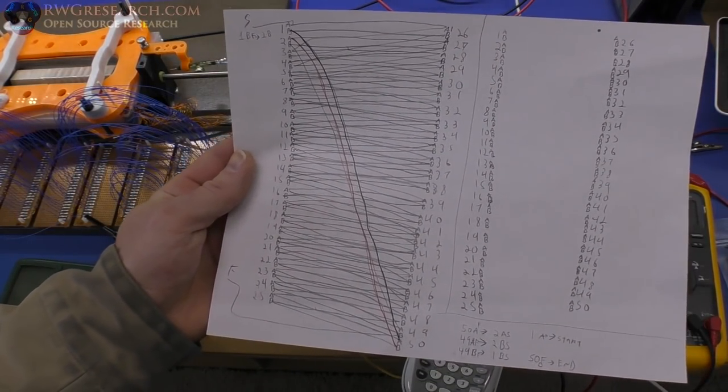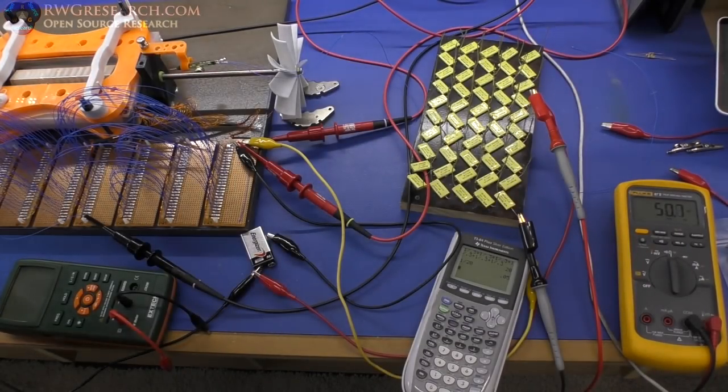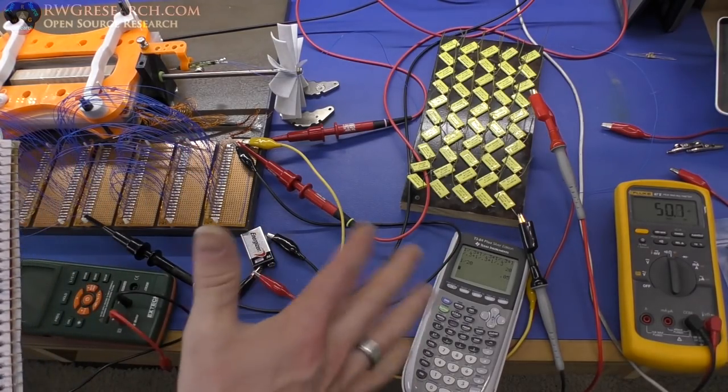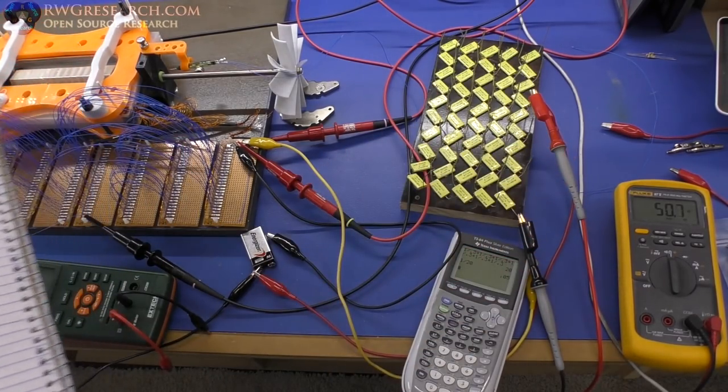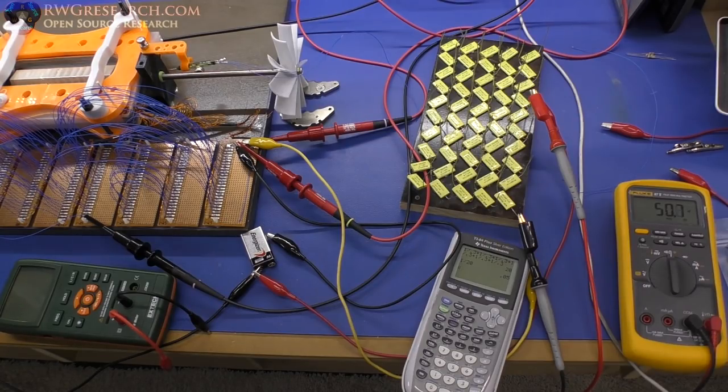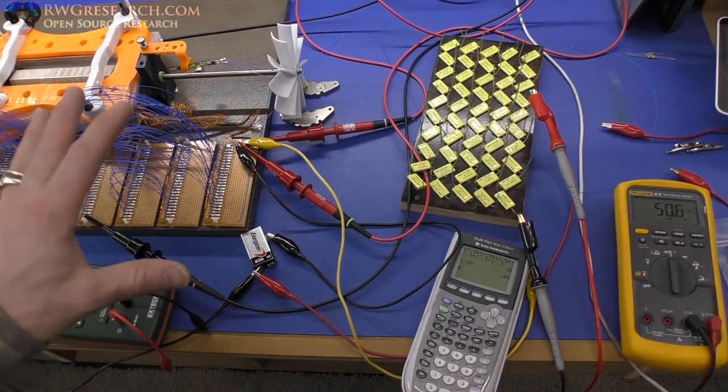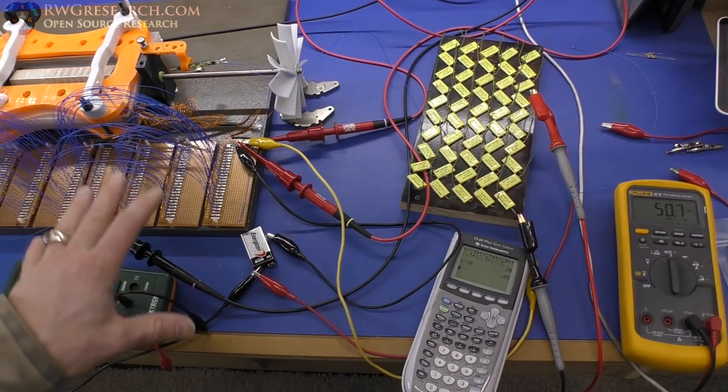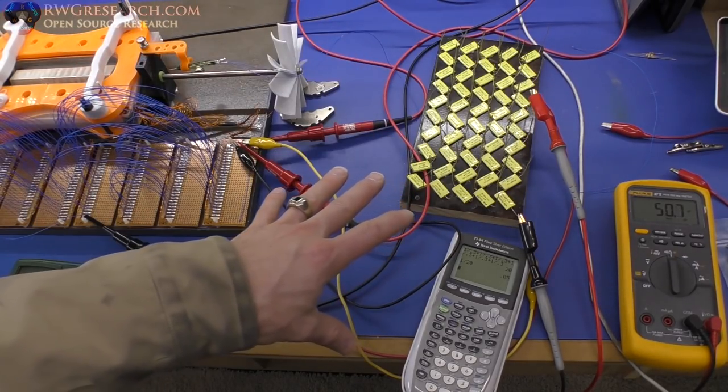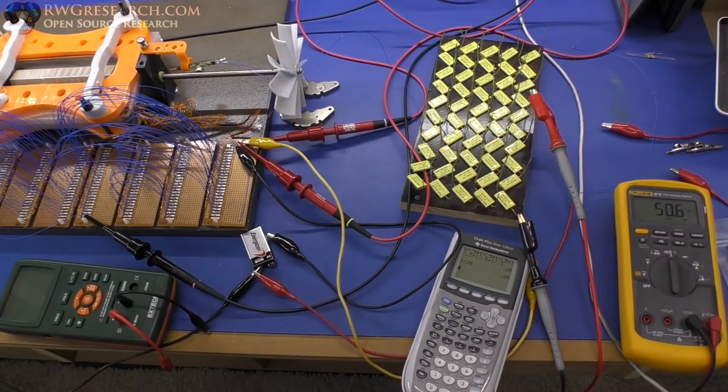So basically what that means is that by going from the original connections to the pattern that I have on the document right there, we've essentially added roughly 50 nanofarads. It's a bit tricky here. I wouldn't expect the inductance to have changed much. It should have pretty well stayed the same. So the only thing we're adding is the capacitance and we get roughly 50 nanofarads.